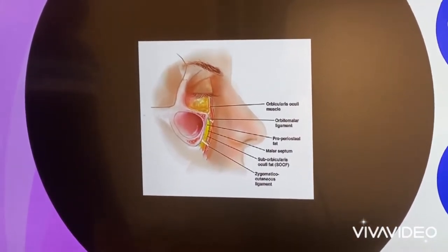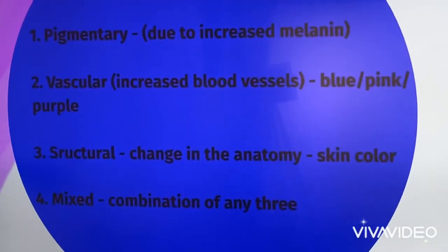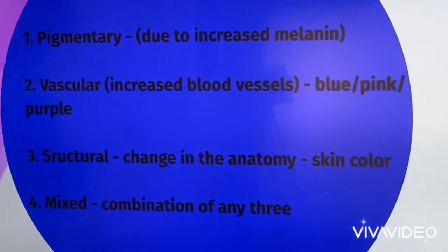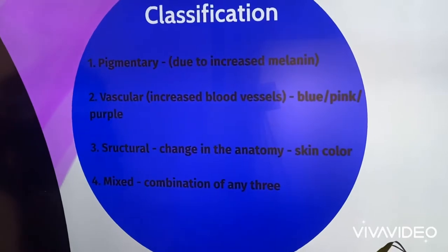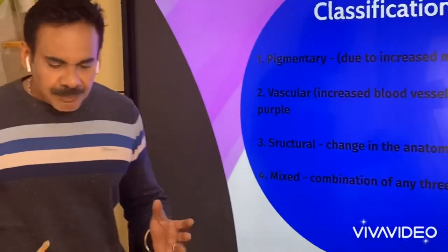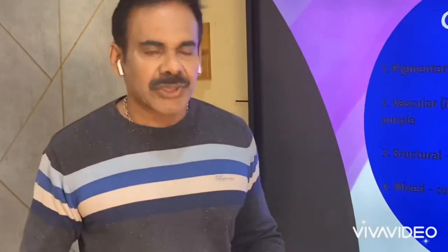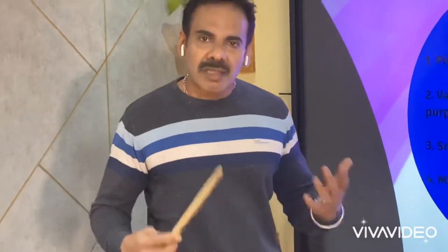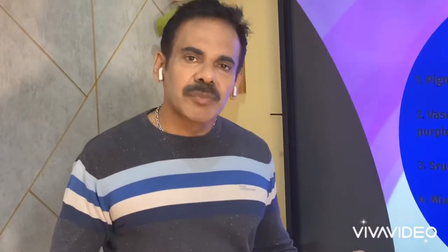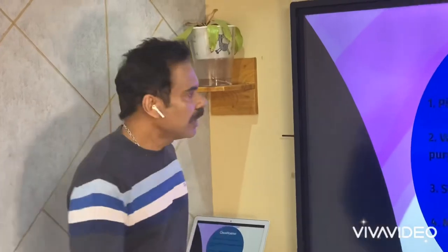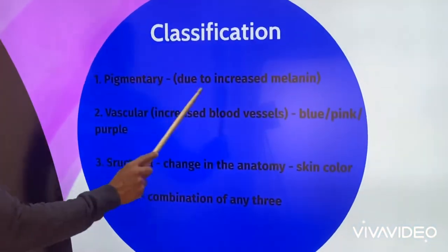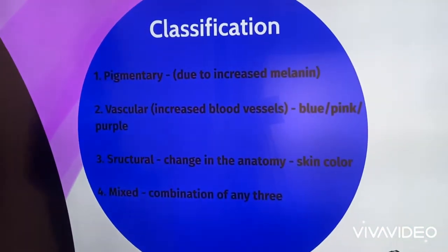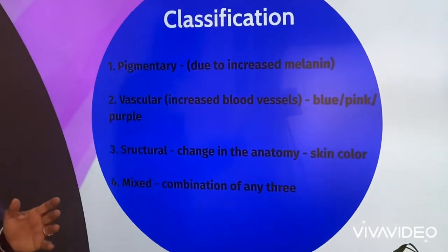Let's look at the classification of under-eye pigmentation - the four-type classification. The first one is pigmentary, which is increased melanin pigmentation. Melanin is the pigment that gives color to our skin; the more melanin present, the darker the skin will be. So the first type is pigmentary - increased melanin causes pigmentation.